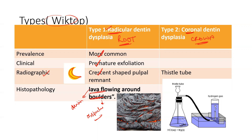Coming to coronal dentin dysplasia, the main feature is the radiographic appearance, which is of a thistle tube. A thistle tube has a funnel-shaped end at one side. This was the general overview of radicular versus coronal dentin dysplasia, and these are the most high-yield points for any exam.